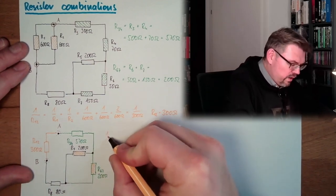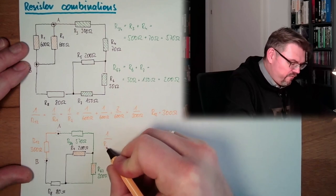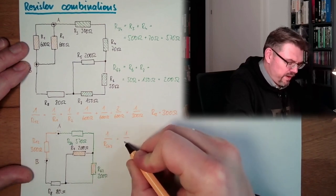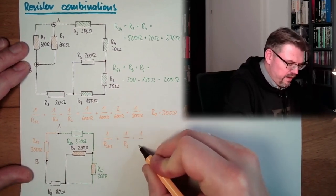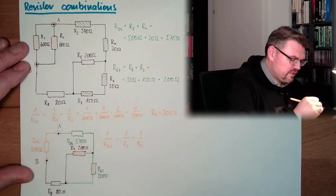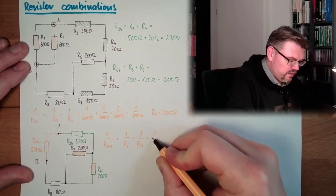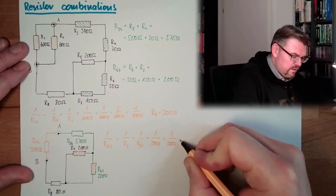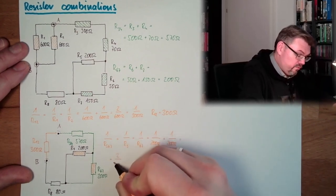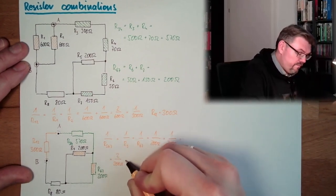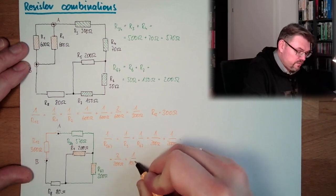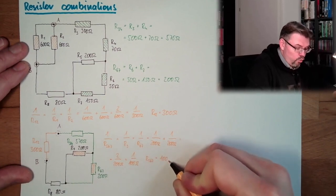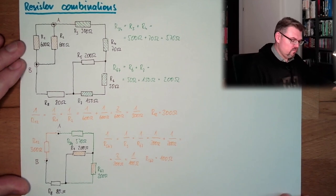So actually, we have here 1 divided by R567 combined equals 1 divided by R5 plus 1 divided by R67. And this is pretty much the same game as here. Because it's 1 divided by 200 ohms plus 1 divided by 200 ohms is 2 divided by 200 ohms. This is 1 divided by 100 ohms. So this means R567 is 100 ohms. Okay.